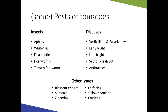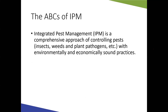Some common pests in tomatoes — not an exhaustive list. Insects include aphids, whiteflies, flea beetles, hornworms, and tomato fruit worms. Common diseases here in Illinois include wilts like verticillium and fusarium, blight diseases like early and late blight, septoria leaf spot, and anthracnose. Abiotic issues include blossom end rot, sun scald, zippering, cat facing, yellow shoulder, and cracking.